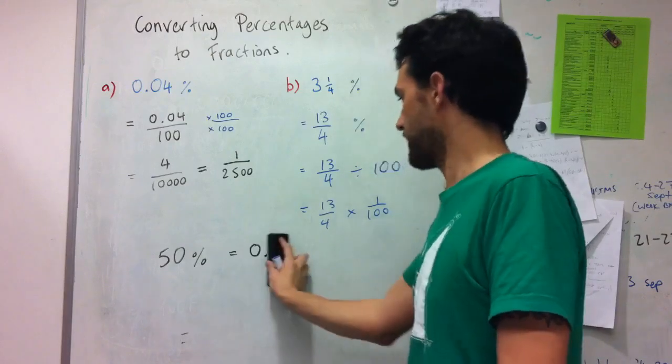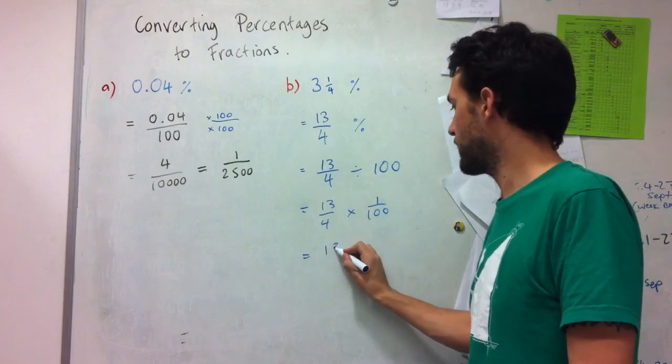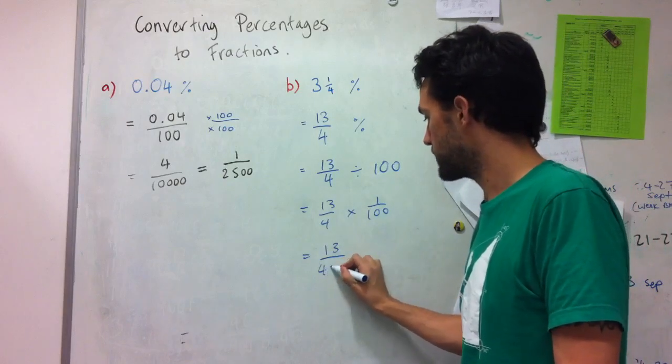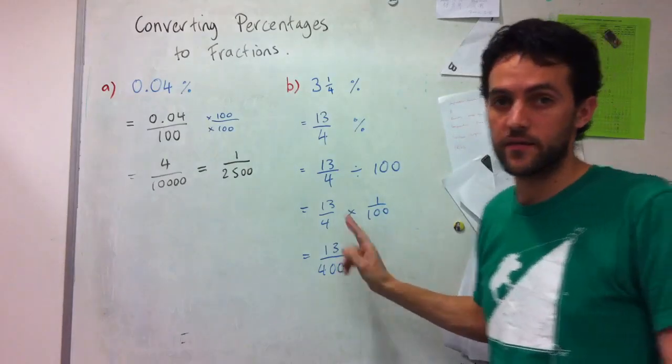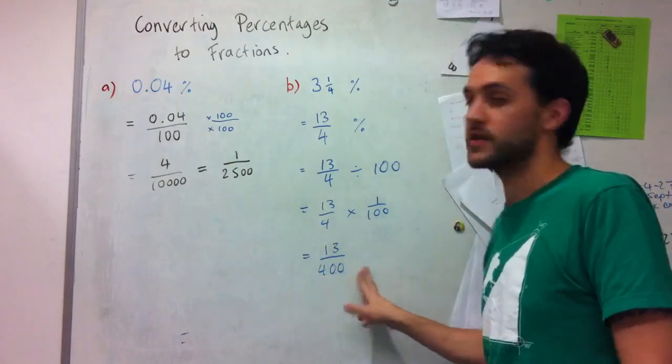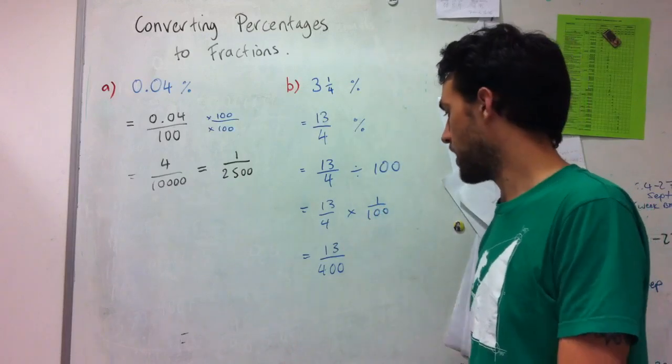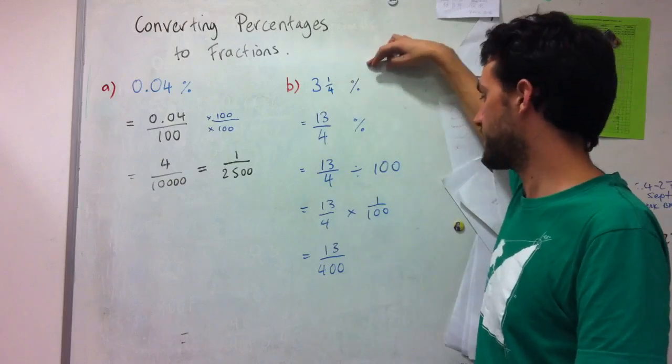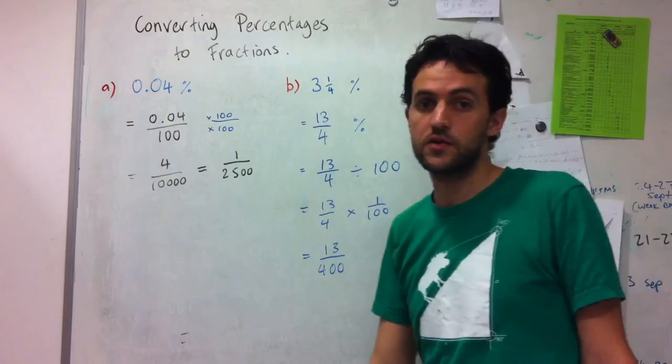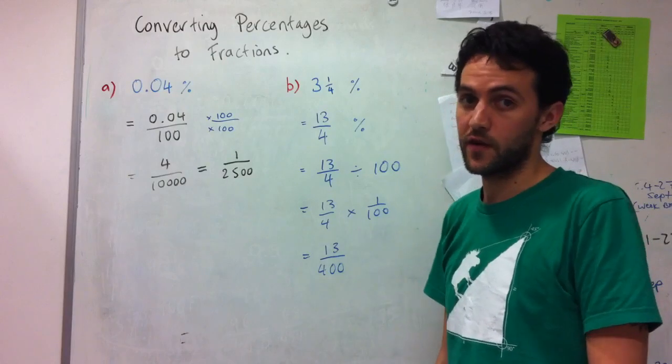And then I might just get this out of the way. And then that gives me thirteen on four hundred. At this stop, because thirteen is a prime number and four hundred is not a multiple of thirteen, I've got two relatively prime numbers so this is already in simplest form. So three and a quarter percent is actually equal to the fraction thirteen over four hundred, or thirteen four hundredths.